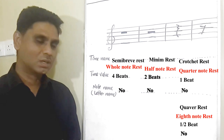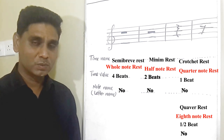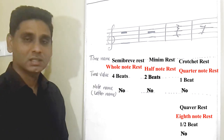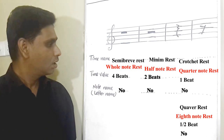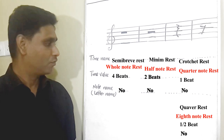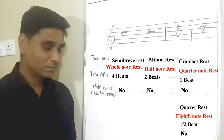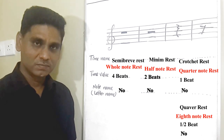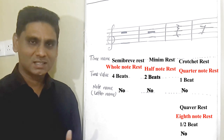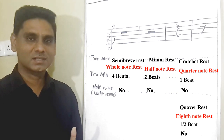Let's do some exercises and see how we play those music notes using these three things. When playing the piano, you have to know the time name of a note, the time value, and the note name. Let's go to the piano and do some exercises until you get used to it.